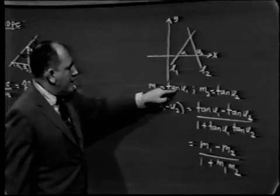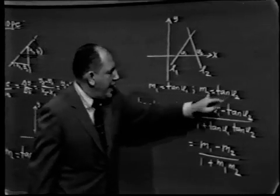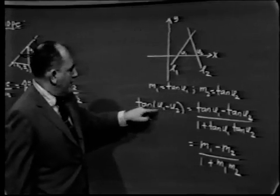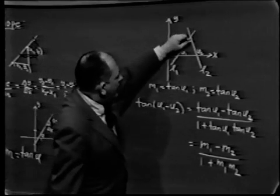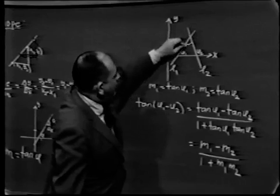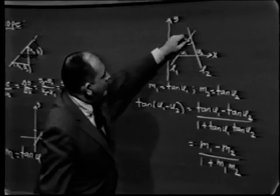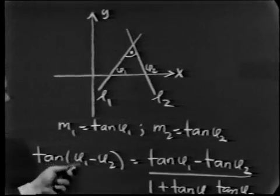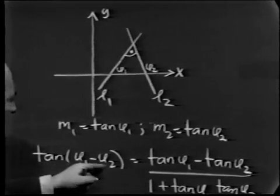Therefore, M1 is tan phi1, M2 is tan phi2. Notice that our formula for the tangent of the difference of two angles—notice that this angle here is, since this angle is the sum of these two, phi2 minus phi1 or the negative of phi1 minus phi2.